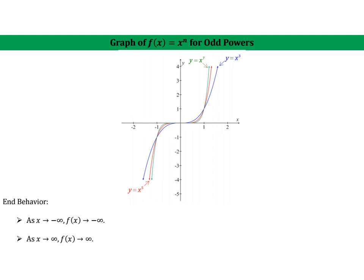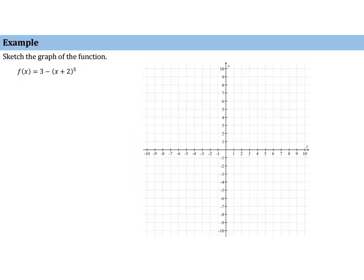And, again, that's something akin to end behavior. What we have now is essentially a new set of functions to add to our library of functions, and we can use transformations to graph these. So, if we think of our parent as y equals x to the fifth, then that would look like this.